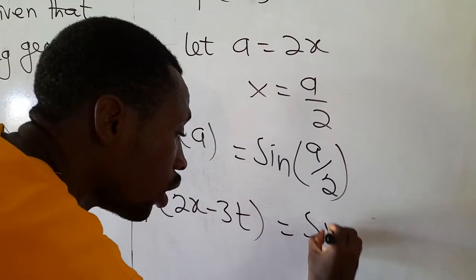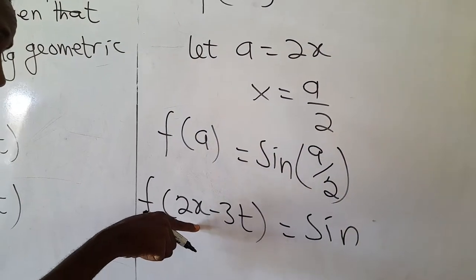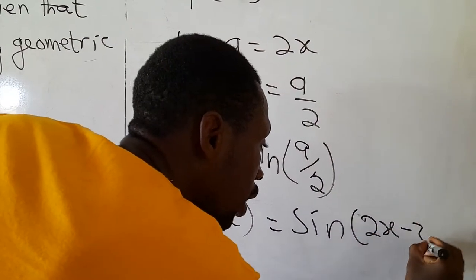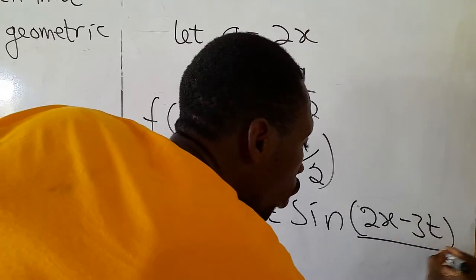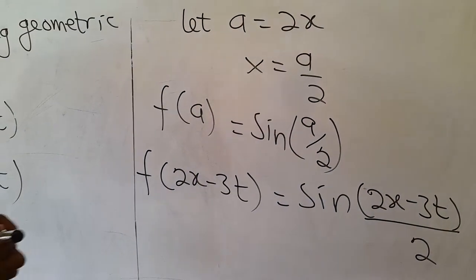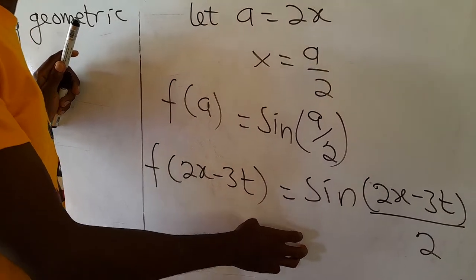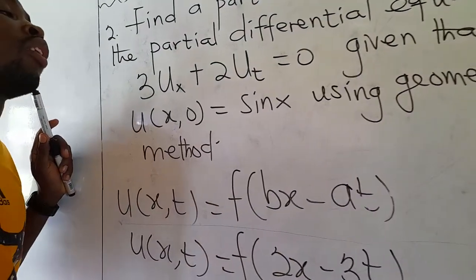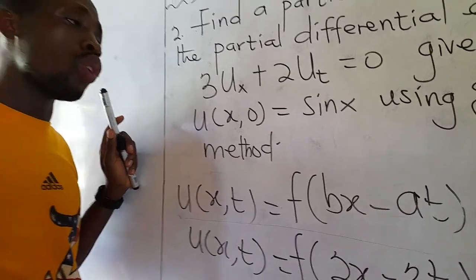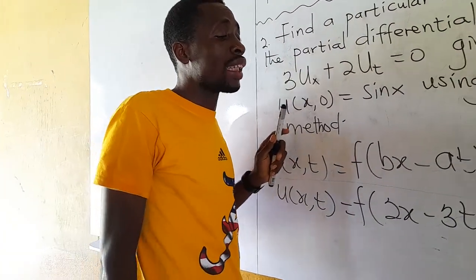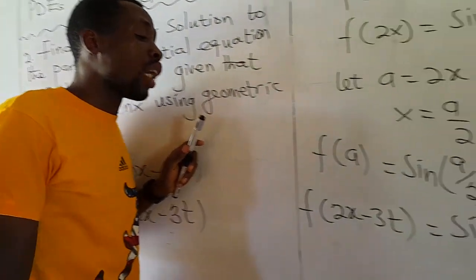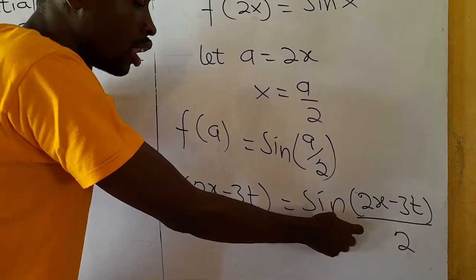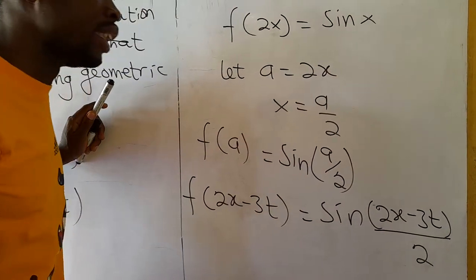This becomes a particular solution to our constant coefficient first order partial differential equation using the geometric method. You can test whether this is actually a particular solution. Let's test to see if this is actually a particular solution to the PDE.